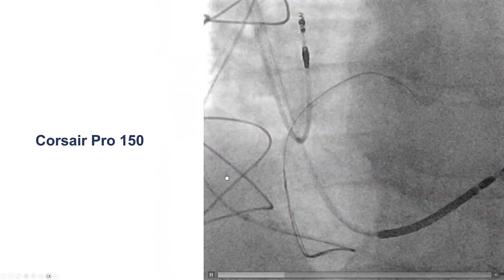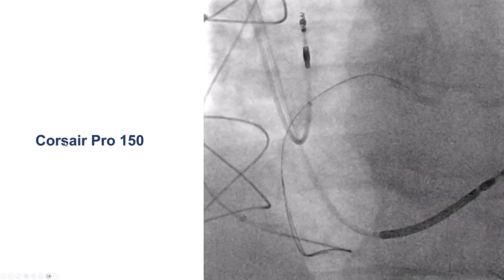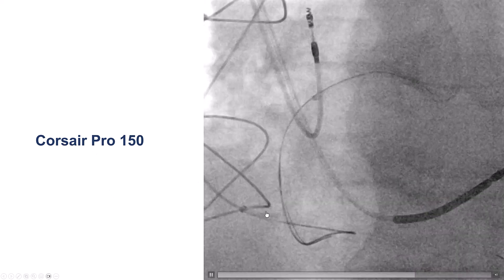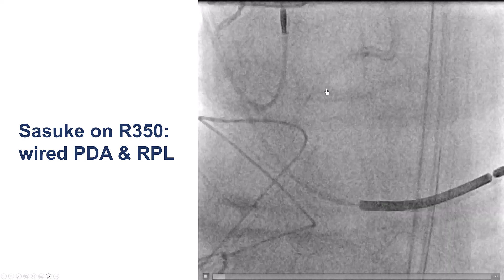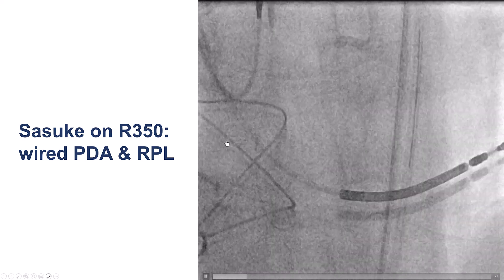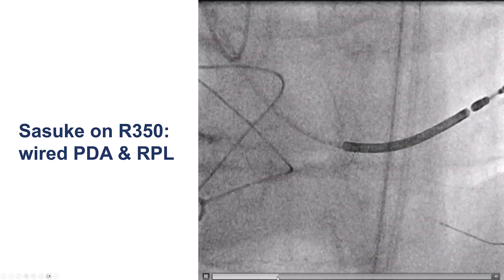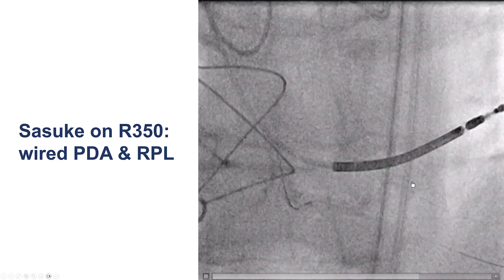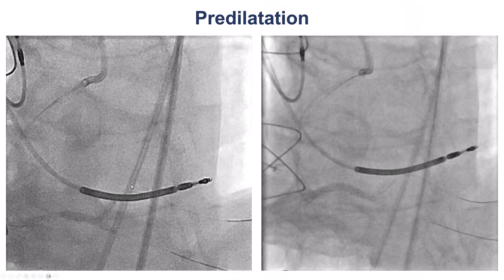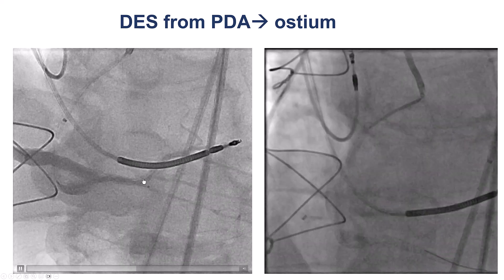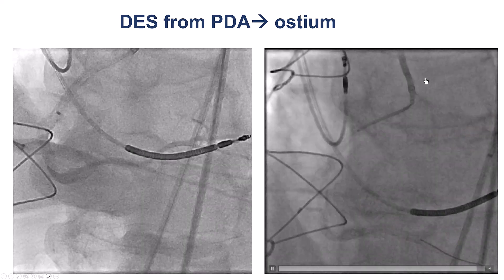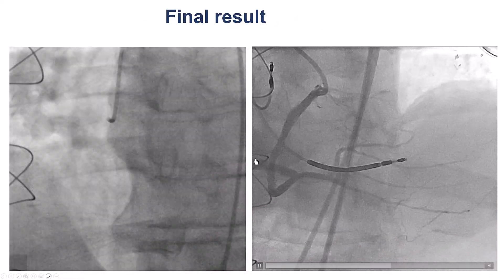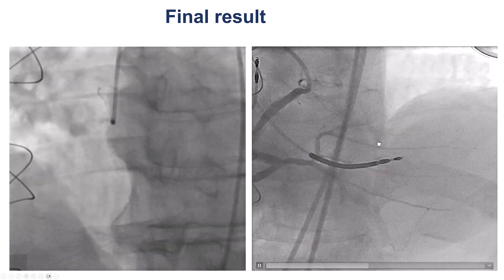After this, we decided to use a microcatheter that is a little larger and more supportive — the Corsair — and repeated the same steps. We went retrograde, advanced the retrograde wire into the antegrade guide catheter, and externalized. We used a dual-lumen microcatheter to successfully advance a guide wire into the posterolateral as well as the PDA. We then predilated both vessels and, after removing the retrograde wire, placed stents all the way from the PDA to the ostium of the right coronary artery, obtaining a nice result with TIMI 3 flow in both the PDA and posterolateral.